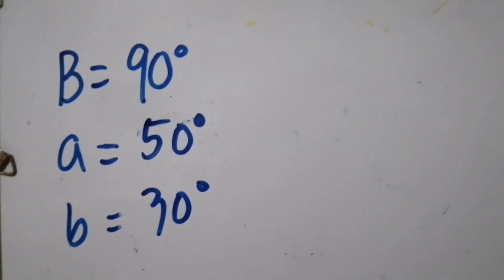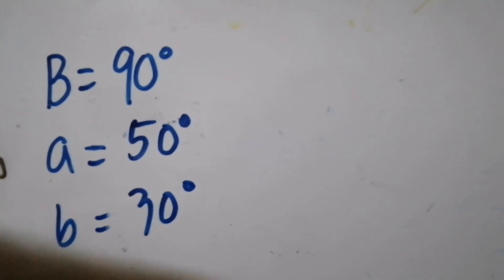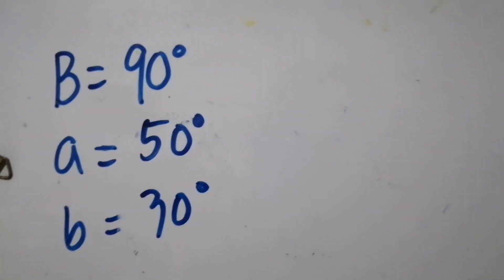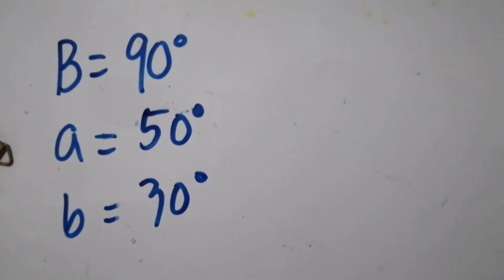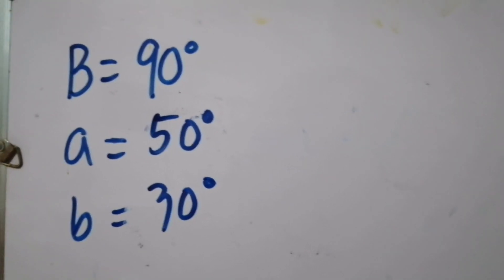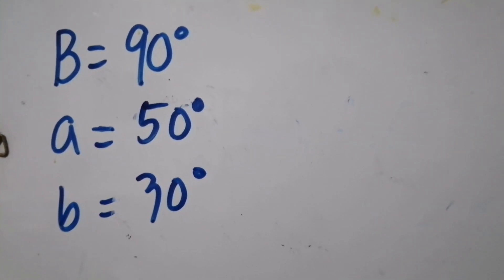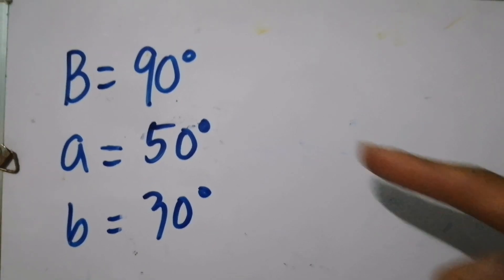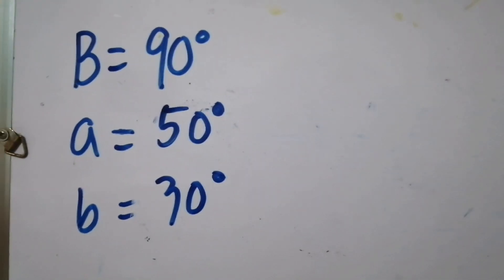Good day, guys. This is Mr. Fajardo, your teacher in Spherical Trigonometry. The next thing we have to do is solve for the other unknown parts of a right spherical triangle given some of its parts — at least three of the parts. We have the 90-degree angle and then the other two sides which are given.